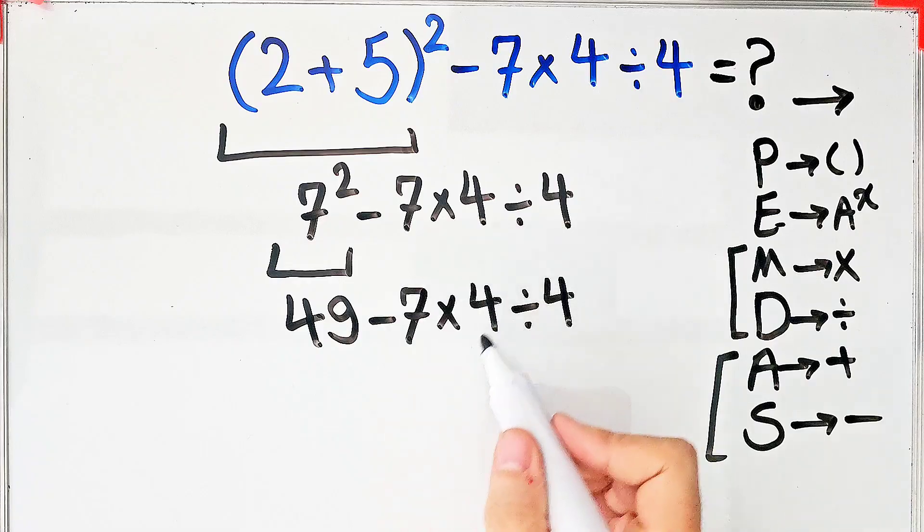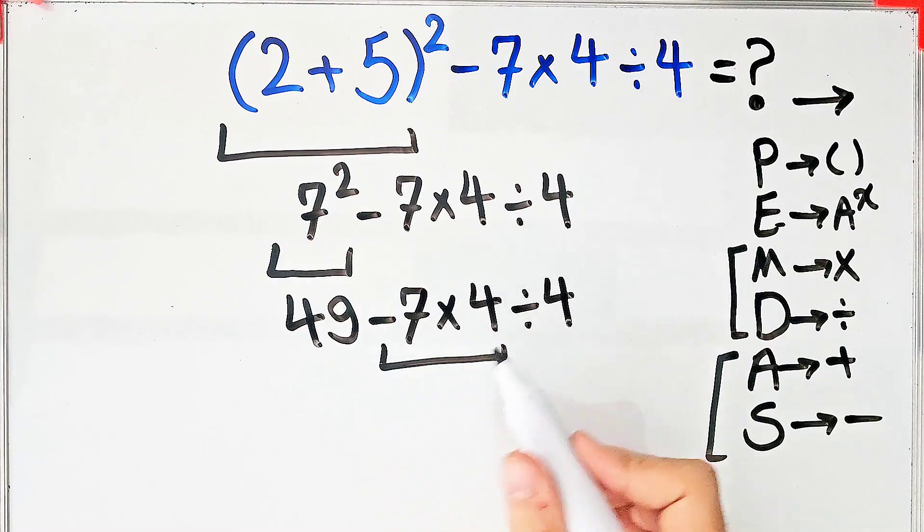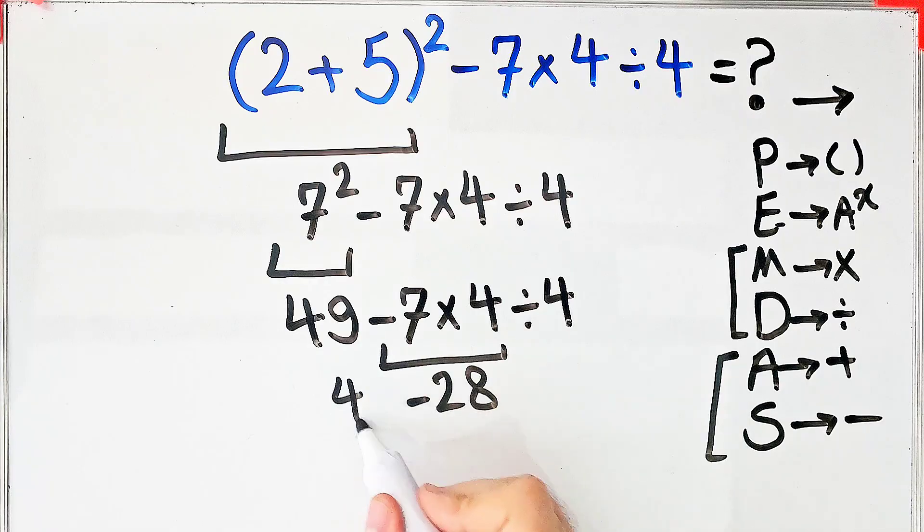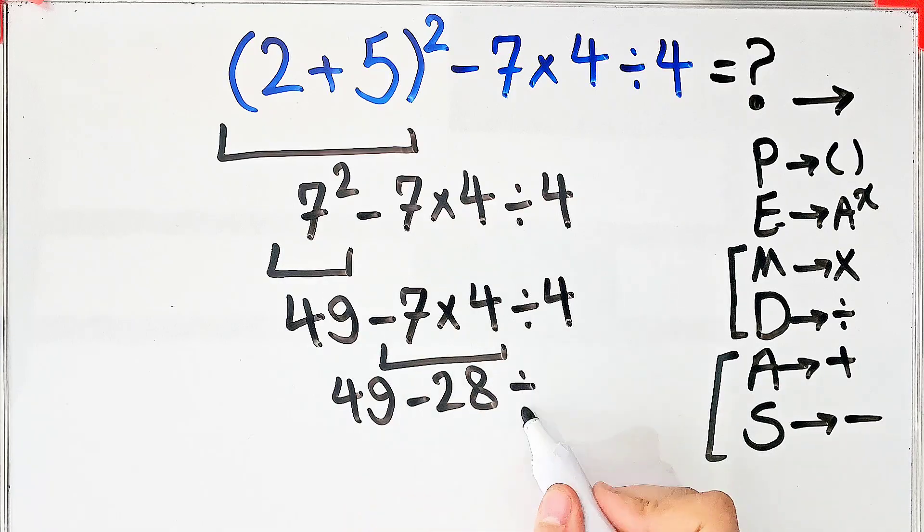Now we simplify this multiplication: 7×4 equals 28. Now we have 49 - 28÷4.